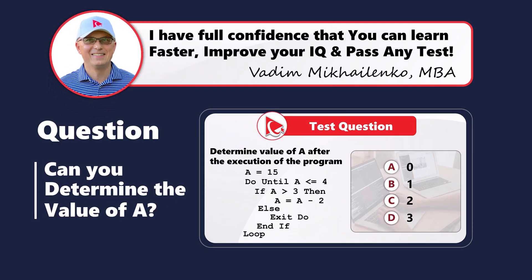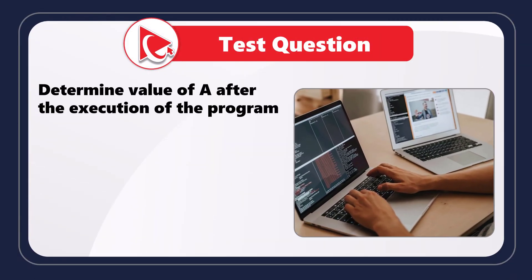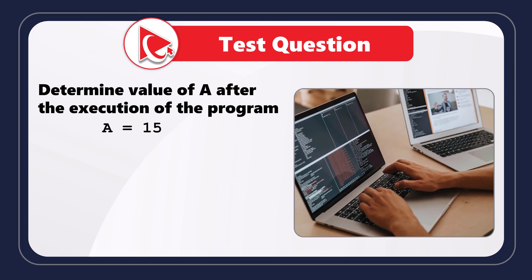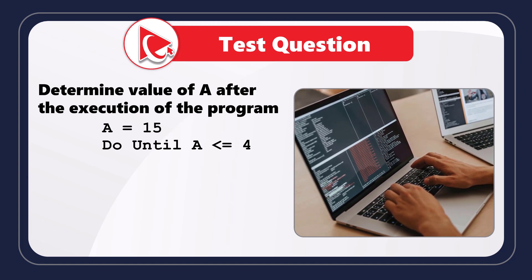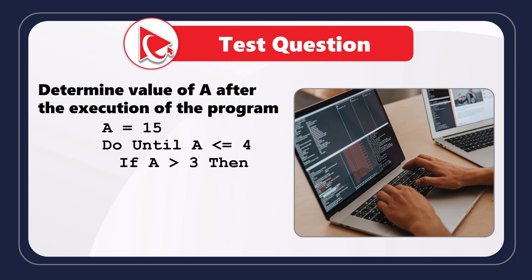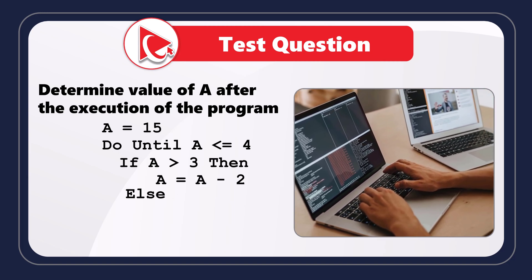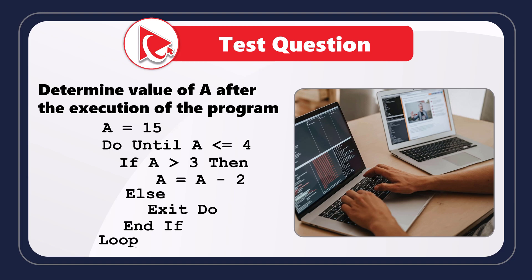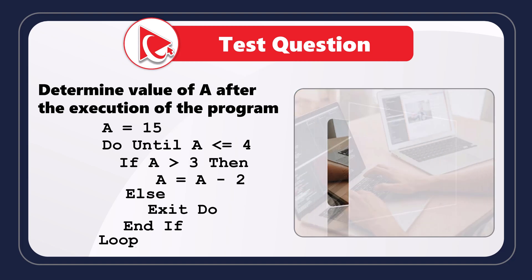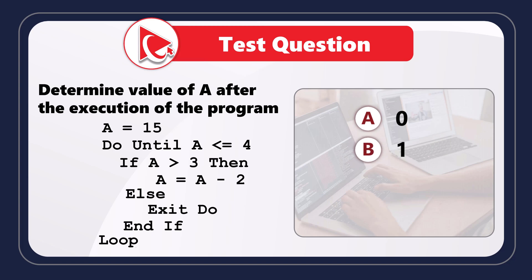Here's an amazing question to test your programming skills. You need to determine the value of a after the execution of the program. The initial value of a is 15, then the logic runs: do until a is less than or equal to 4 — inside the loop, if a is greater than 3 then a equals a minus 2, else exit do. Select the final value of a from four choices: A) 0, B) 1, C) 2, D) 3.